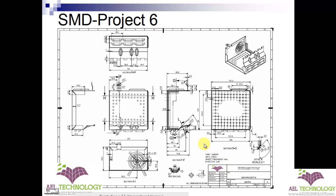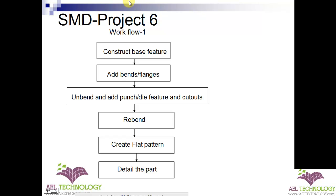This is an interesting project. Before we start, just to reconfirm the workflow we generally follow: we will first construct the base feature, then add a few bends or flanges. Then we unbend and add punch and die features and cutouts. Then we will rebend, create a flat pattern, and finally detail the part.